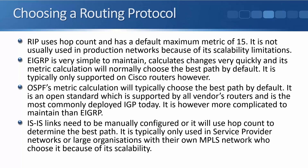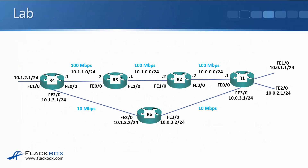ISIS links need to be manually configured, or it will default to hop count, which is usually not what we want. It's typically only used in service provider networks or large organizations with their own MPLS network, chosen for its scalability. So it really comes down to either EIGRP or OSPF for most organizations. EIGRP is the simplest to use and works great, but only if you're using all Cisco routers. OSPF also works great and is supported on all vendors' routers, but is more complicated to maintain. That's everything on metrics — let's have a look at how it works in the lab next.